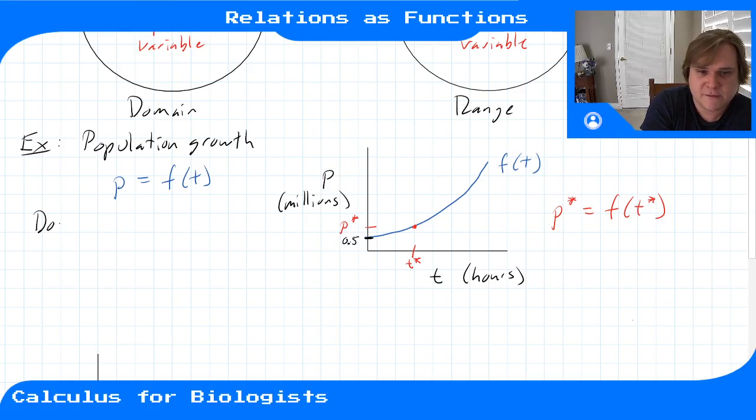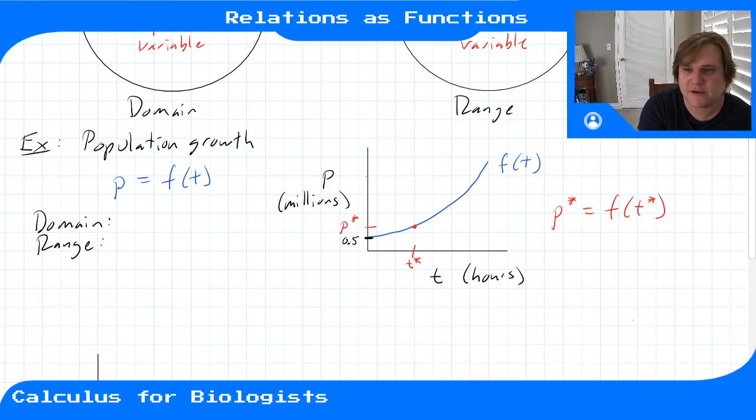And so the domain and range of this function - what t values, what values of this independent variable are we allowed to put into this function? Well, this was a real experiment, so time started at 0 and you could keep counting forever. So our domain should be t greater than or equal to 0. Starting from 0 and any other time is fine to stick into this function.